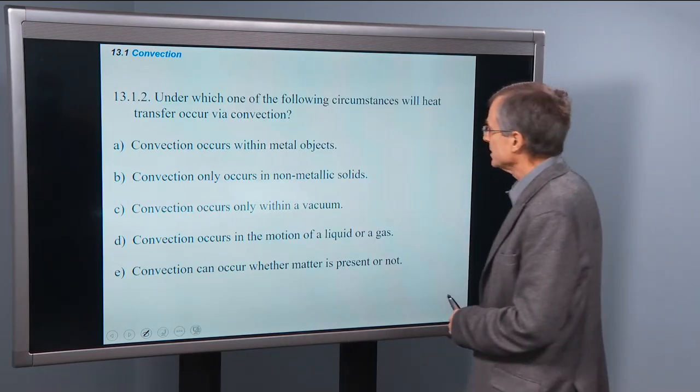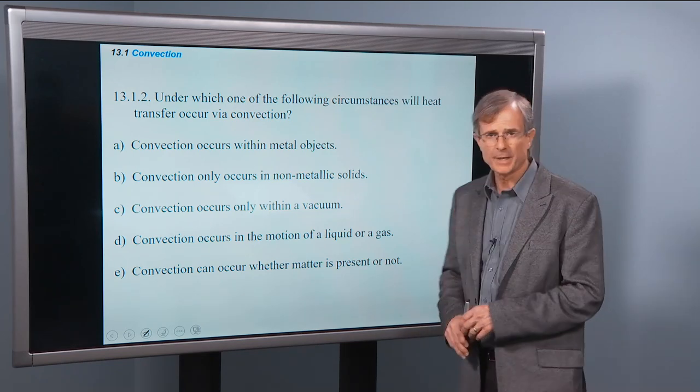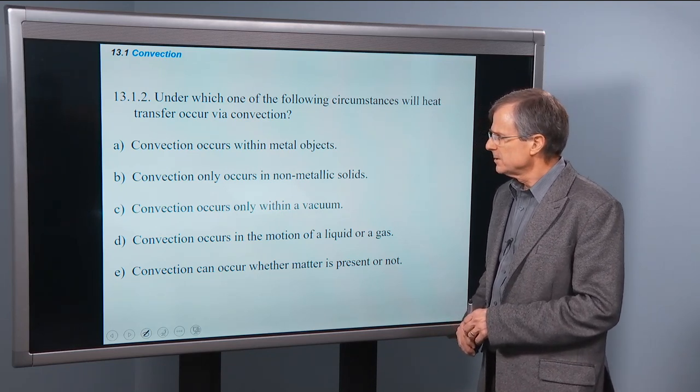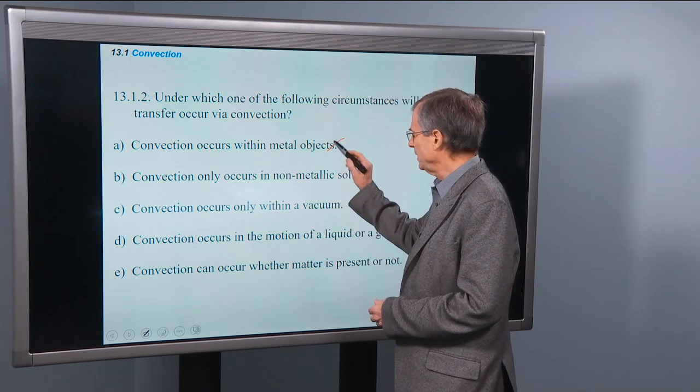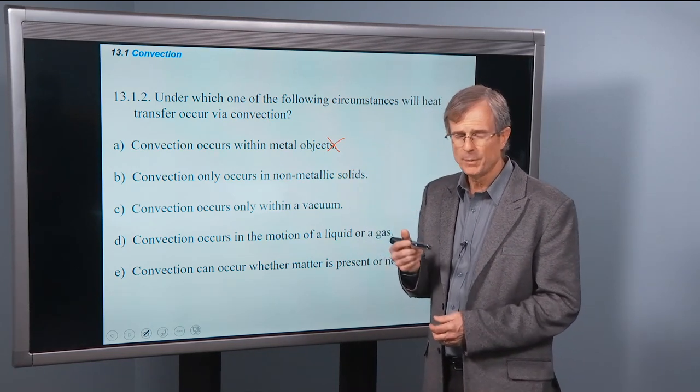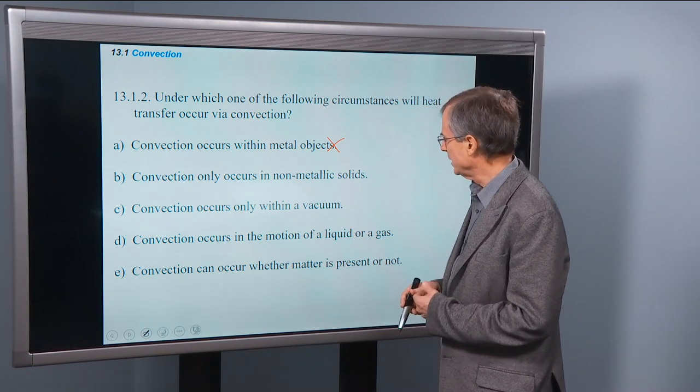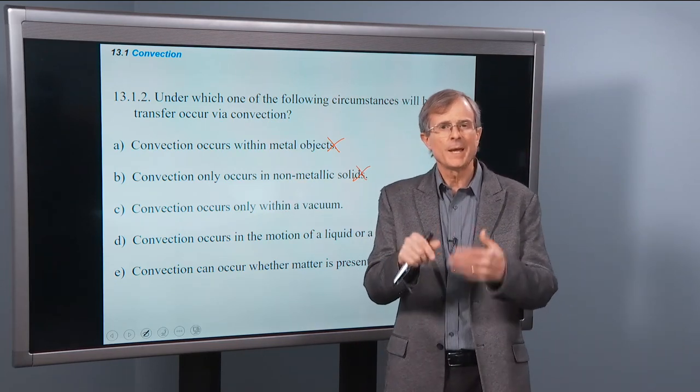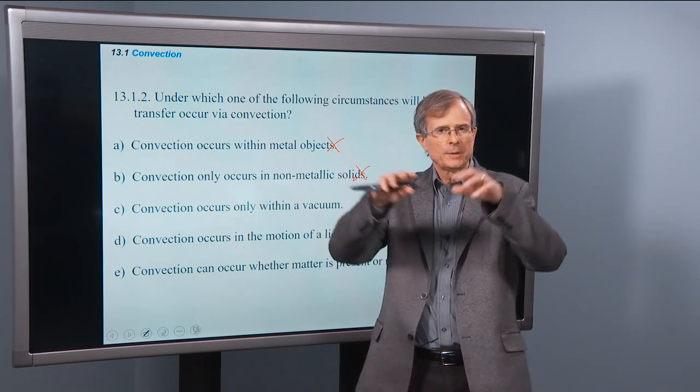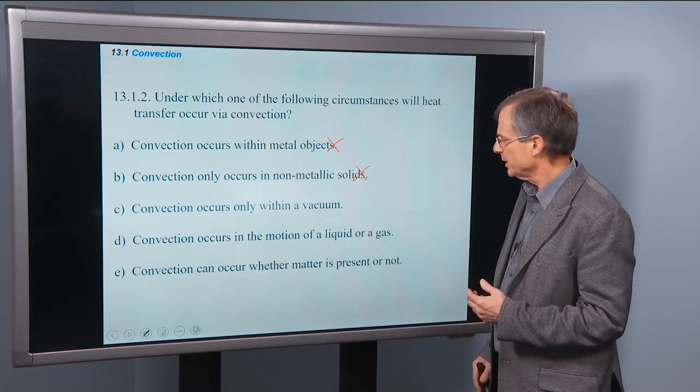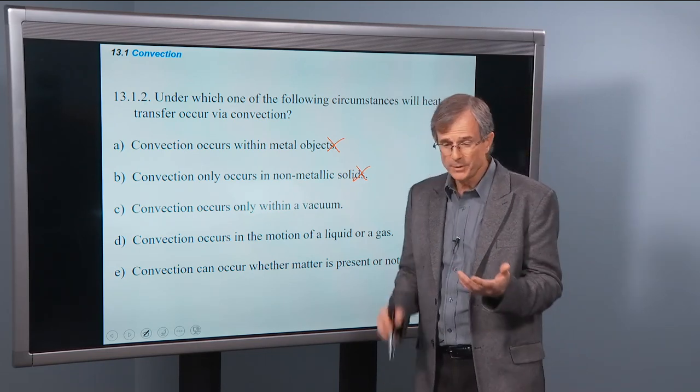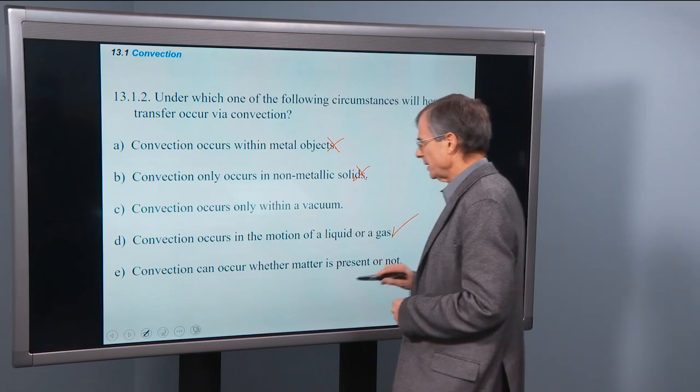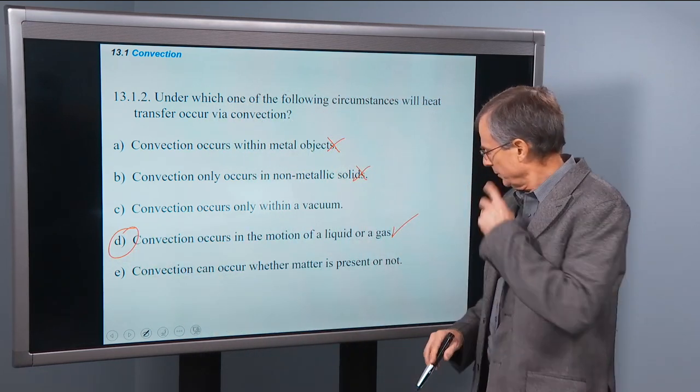Under which of the following circumstances will heat transfer via convection? Convection occurs within metal objects. So the answer to that is no. As it turns out, this will be conduction, heat transfer by conduction. Convection only occurs in non-metallic solids. It doesn't occur in solids at all. Convection only occurs in liquids and gases. You have to have some motion of the fluid. And convection occurs only within a vacuum. Well, that's not true either. You've got to have some air, or liquid, or water. Convection occurs in the motion of a liquid or gas, so that's the one. Occurred whether matter is present or not. Nope.